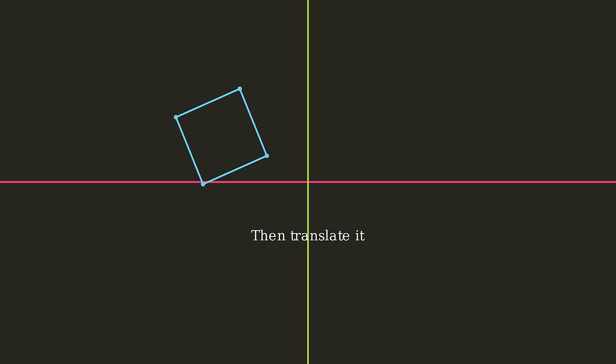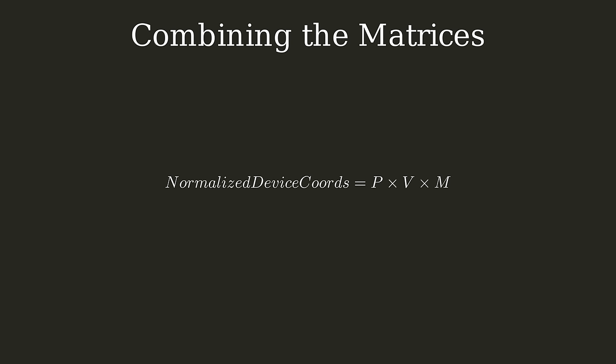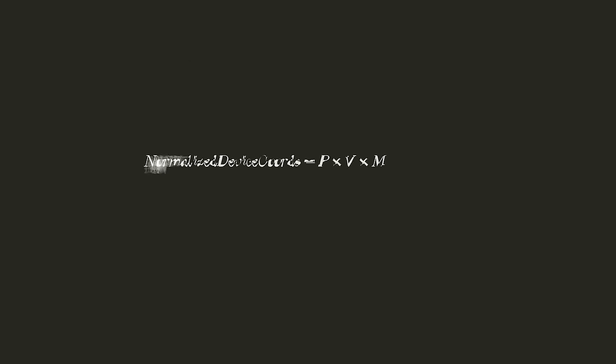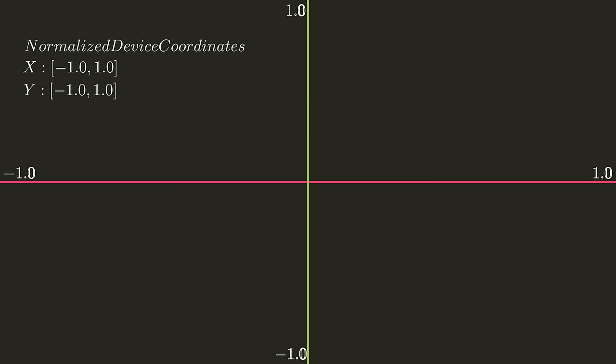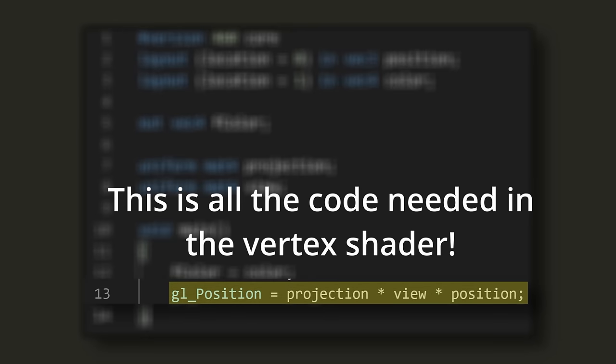Using linear algebra, we can multiply these matrices together to transform all of our object's vertex data, which is in local space, into normalized device coordinates — the normalized 2D positions on our screen. In OpenGL, the normalized device coordinates range from negative one to one in the x and y directions. This makes it very easy for the GPU to multiply all these values to whatever the user's screen resolution is to get the pixels in the correct location. This all sounds very complicated, but in practice it usually ends up being just a handful of lines of code if you're using a math library.